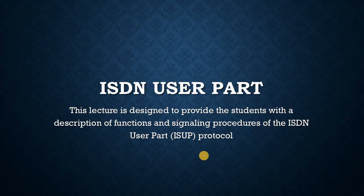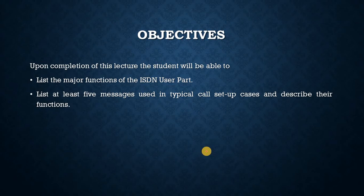This lecture is designed to provide students with a description of functions and signaling procedures of the ISDN User Part, ISUP, protocol. Upon completion of this lecture, the student will be able to list the major functions of the ISDN User Part, list at least five messages used in typical call setup cases, and describe their functions.